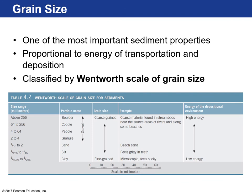The Wentworth scale classifies different sizes of sediment. The largest is boulder; the smallest is clay. Sand is between one-sixteenth and two millimeters in size. Anything larger is considered coarse-grained; silt and clay are considered fine-grained. Beach sand is typically sand-sized material, while the sticky, muddy feeling material would be more like clay.